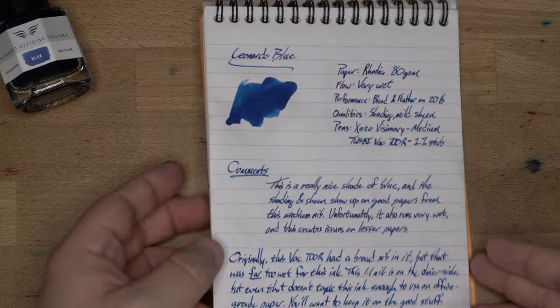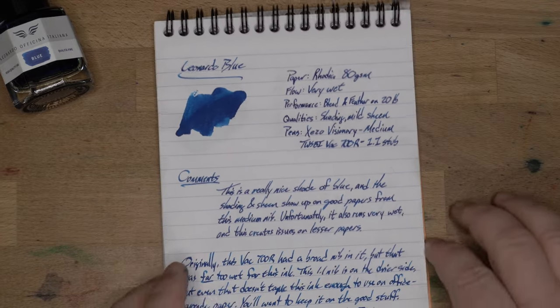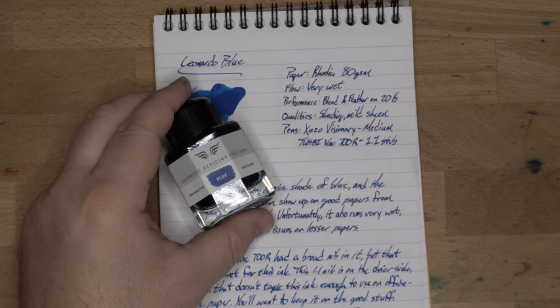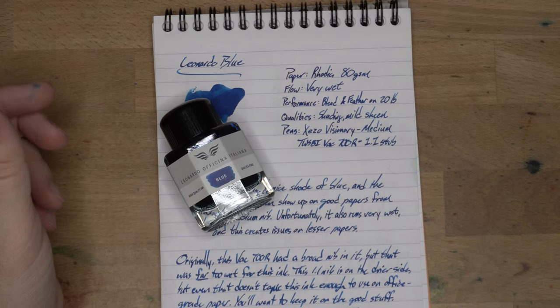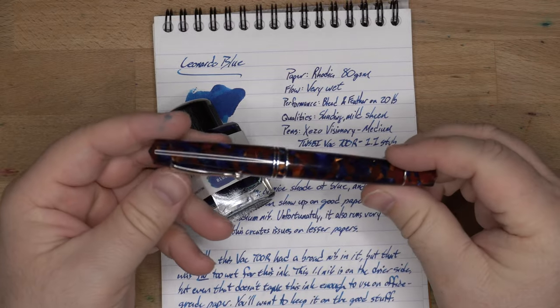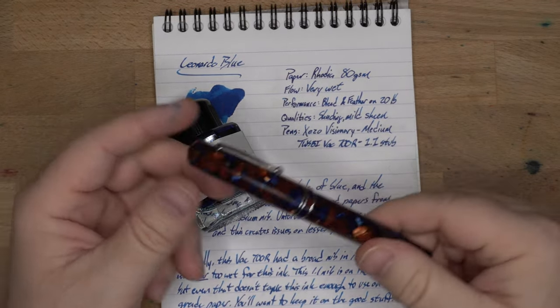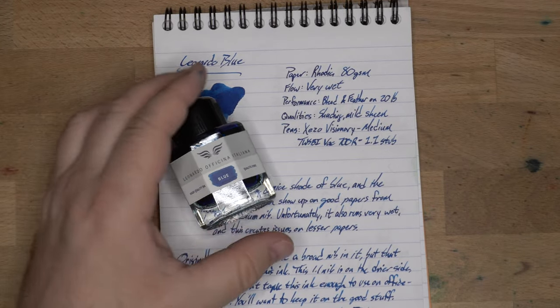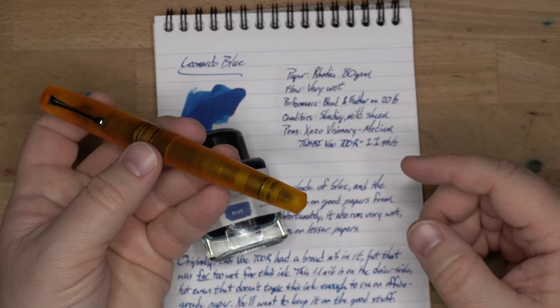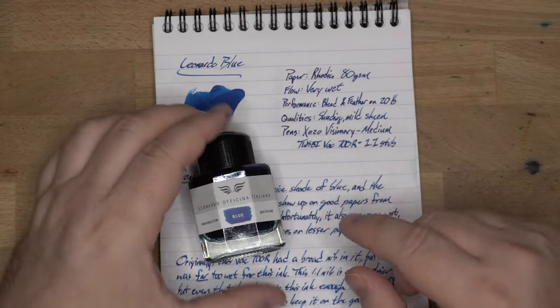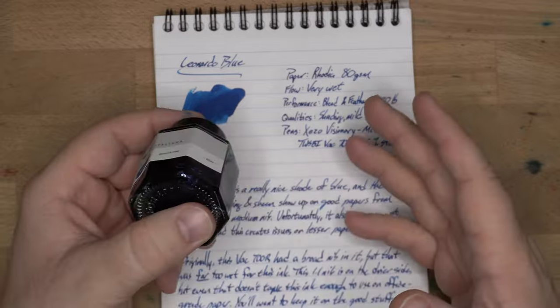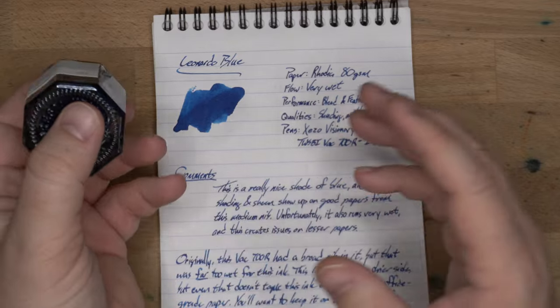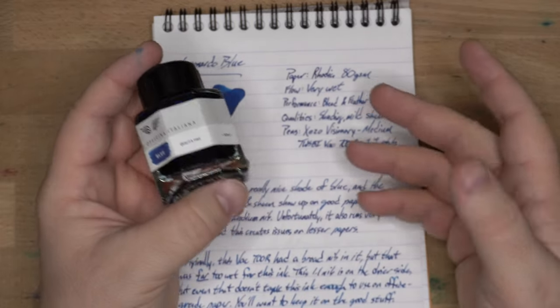Here it is on my usual Rodia paper, 80 grams per square meter Rodia stuff. This ink runs very wet, and that is a thing that is interesting given that it comes with Leonardo's, and one of my very wettest pens is a Leonardo Memento Zero, and then I have a broad nib in a pen like this as well, which is likewise very wet. The pen that it came with, this Pura, is not crazy wet. I don't think they really tuned the ink to the pens as Pelikan does, where they have super wet nibs all the time, and their inks tend to run pretty dry. This one, I think, is just the way it is.